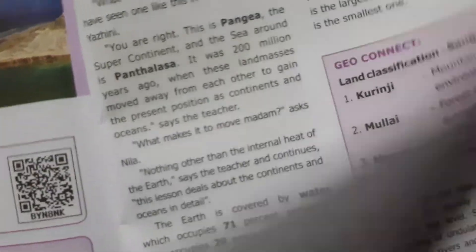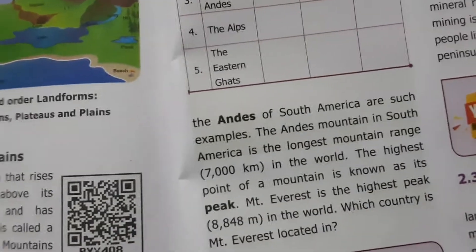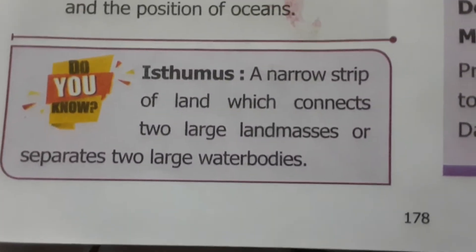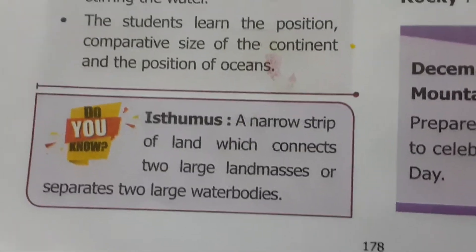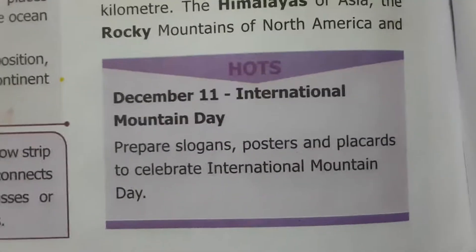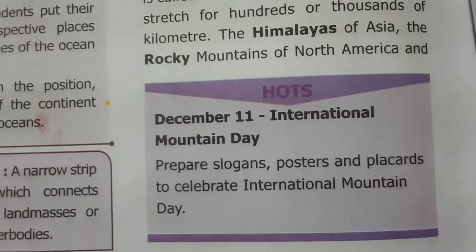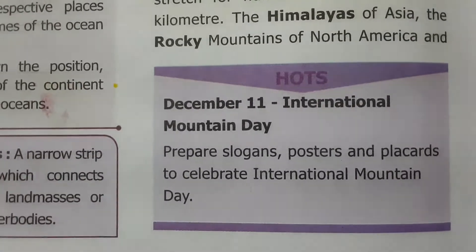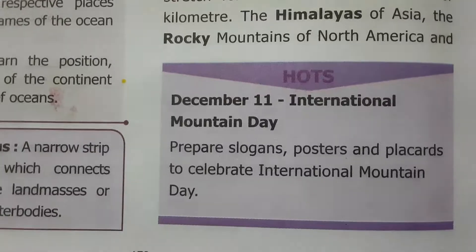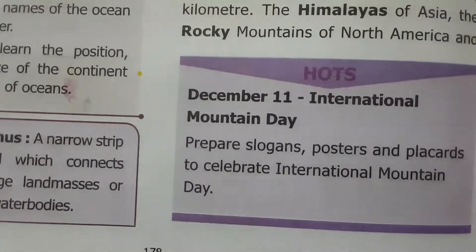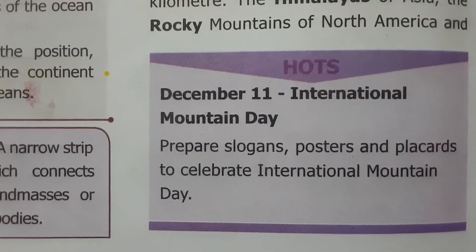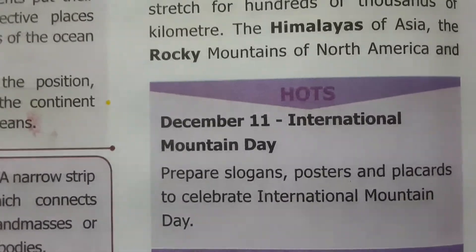The third order comprises valleys, beaches, and sand dunes. What is an isthmus? An isthmus is a narrow strip of land which connects two large landmasses or separates two large water bodies. What is International Mountain Day? Prepare slogans, posters, and placards to celebrate International Mountain Day. December 11 is International Mountain Day.